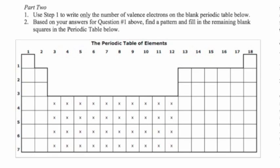We want to use the number of valence electrons to find a pattern on the periodic table. To do that, we're going to place the number of valence electrons in the square for each element. Hydrogen has one, boron has three, and sulfur has six valence electrons. Work out the other examples and see if you can figure out the pattern.